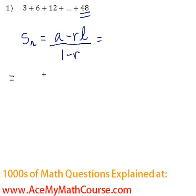So in this case, we have A being 3, R is 2 because it's 6 over 3, which is 2, and L is the last term, 48.